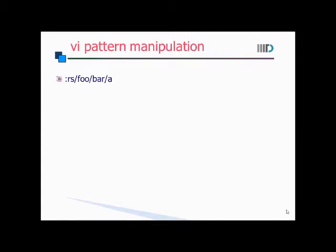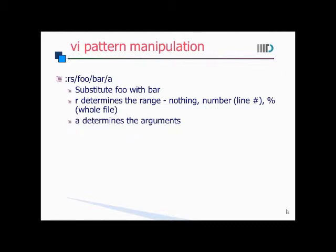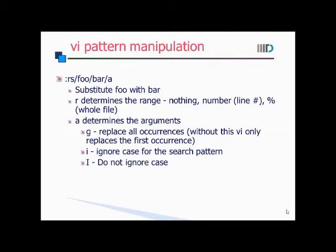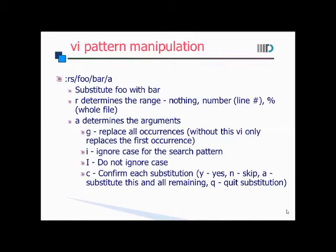Let us look at vi pattern manipulation. This command is used to substitute 'foo' with 'bar'. R determines the range — it can be nothing, a number, or the whole file. A determines the arguments, which can be: G, which replaces all occurrences; I, which is used to ignore the case for the search pattern; i, to not ignore the case; and C, which is used to confirm each substitution.